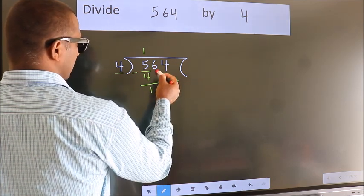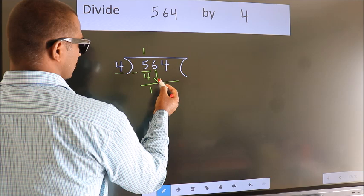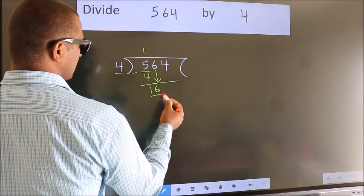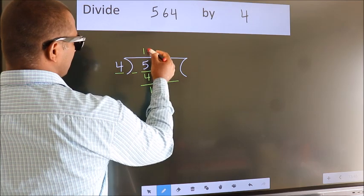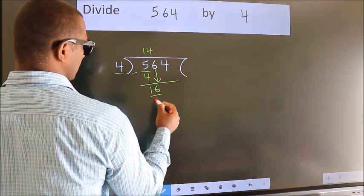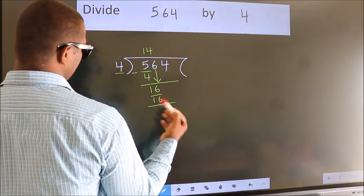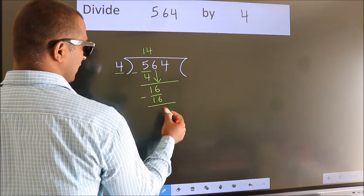After this, bring down the beside number. 6 down, so 16. When do we get 16 in the 4 table? 4 fours are 16. Now we subtract, we get 0.